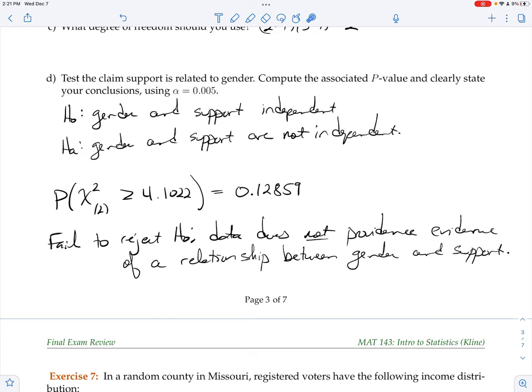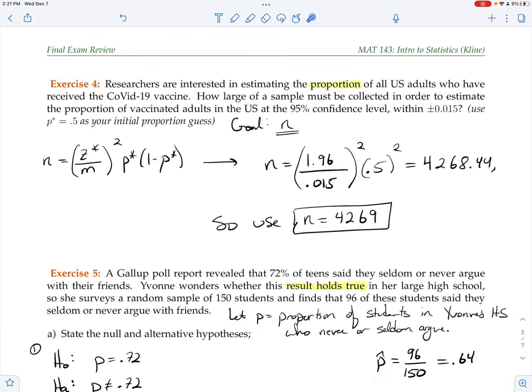We assume the null hypothesis is true until proven otherwise. When we fail to reject the null, it means we're going to keep assuming it's true until we have good reason to believe otherwise. It may well be that there is a relationship between gender and support, but this study, this data, doesn't give any evidence of that.